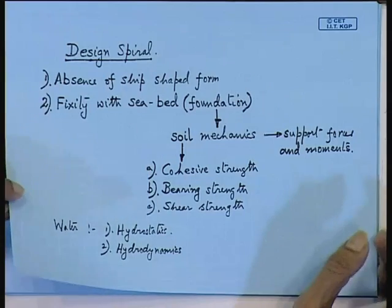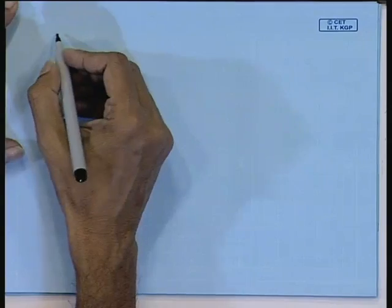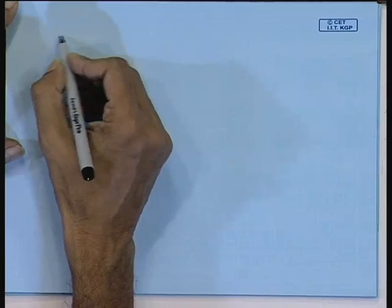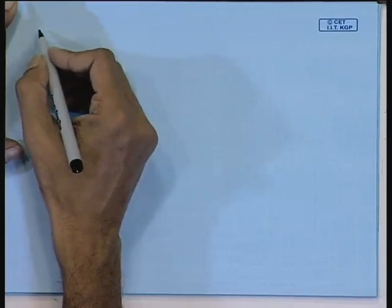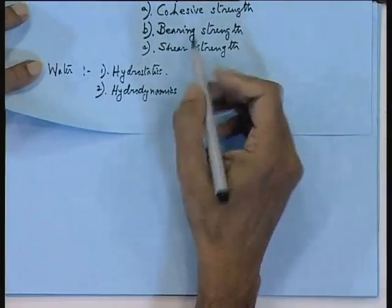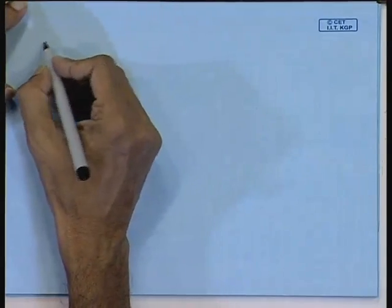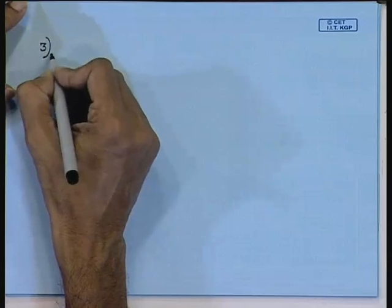Here the trouble starts — you have to be more cautious when designing this kind of platform. Since it is fixed to the ground, ground motions or ground displacements will cause a lot of damage to the structure. Beyond hydrostatics, hydrodynamics, and cohesive strength, the third critical study is ground motions.